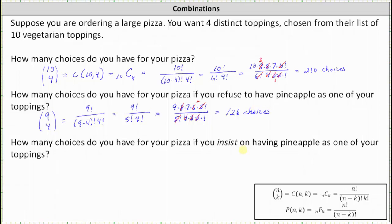The last question: how many choices do you have for your pizza if you insist on having pineapple as one of your toppings? If you insist on pineapple, you are really only selecting three additional distinct toppings from the remaining 9 vegetarian toppings. Therefore, there would be 9 choose 3 choices if you insist on having pineapple.